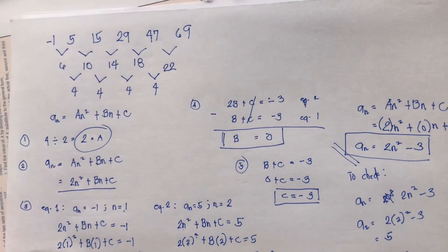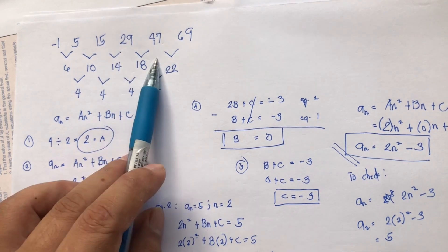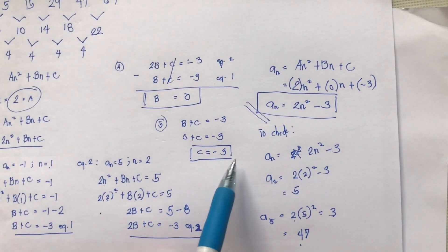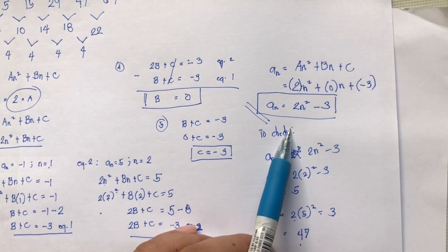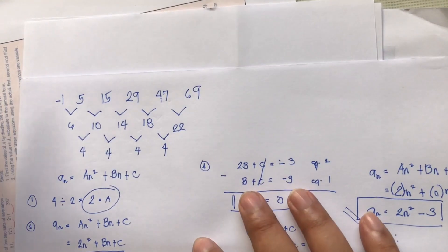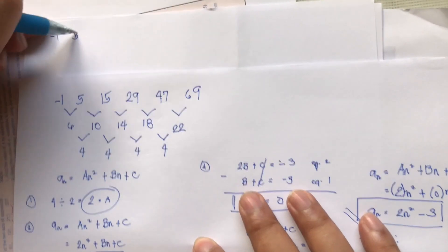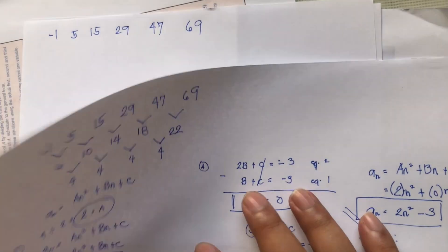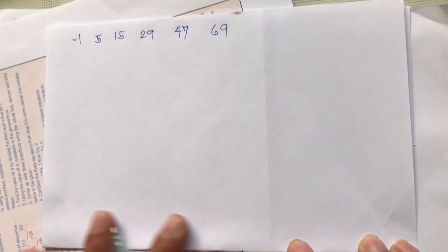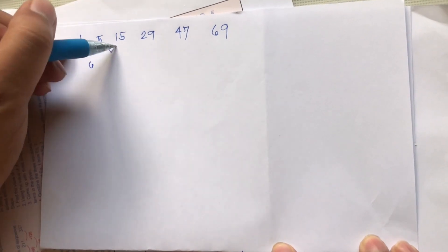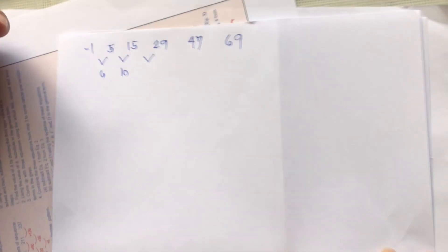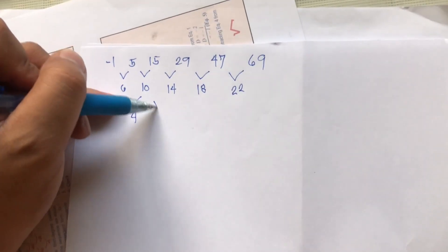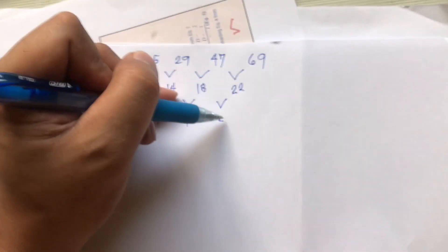Now let's use the second example: negative 1, 5, 15, 29, 47, 69, and verify the answer using the shortcut method. Getting the intervals: from -1 to 5 is 6, 5 to 15 is 10, 15 to 29 is 14, 29 to 47 is 18, 47 to 69 is 22. Second layer: 10 minus 6 is 4, 14 minus 10 is 4, 18 minus 14 is 4, 22 minus 18 is 4. So this is indeed a second-degree sequence.